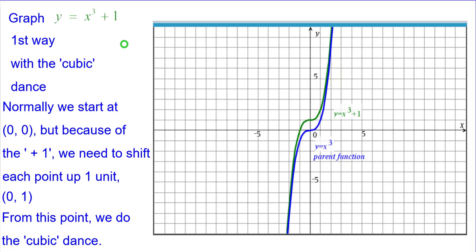And comparing that to the parent function, we can see that from this point, from the blue to the green, it is up one. At this point, from blue to green, it is up one. In fact, from every single point, it's up one.